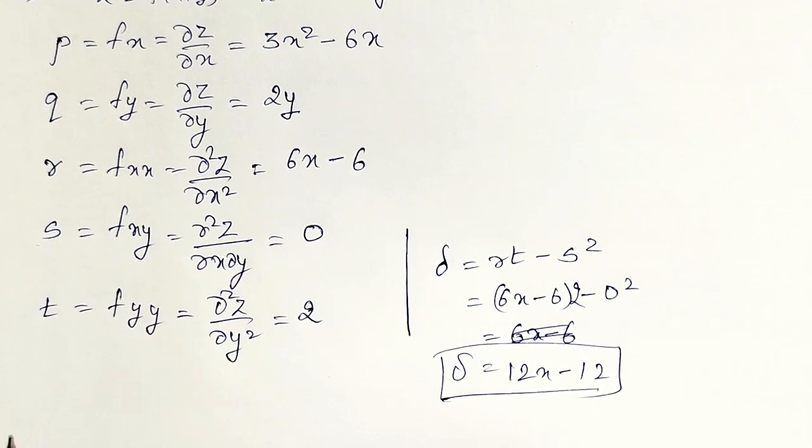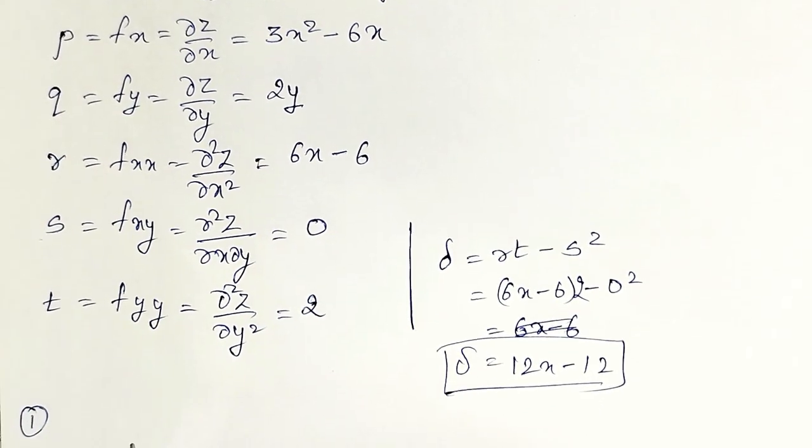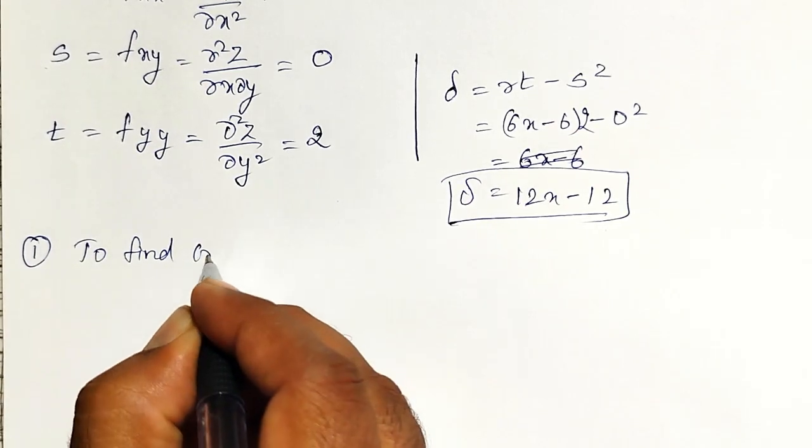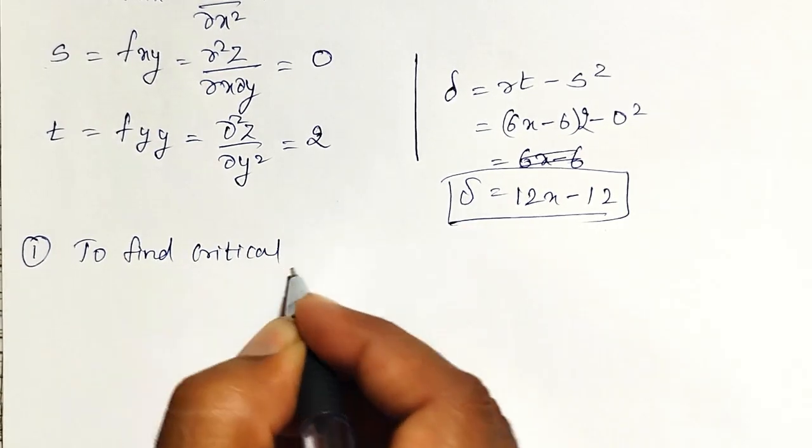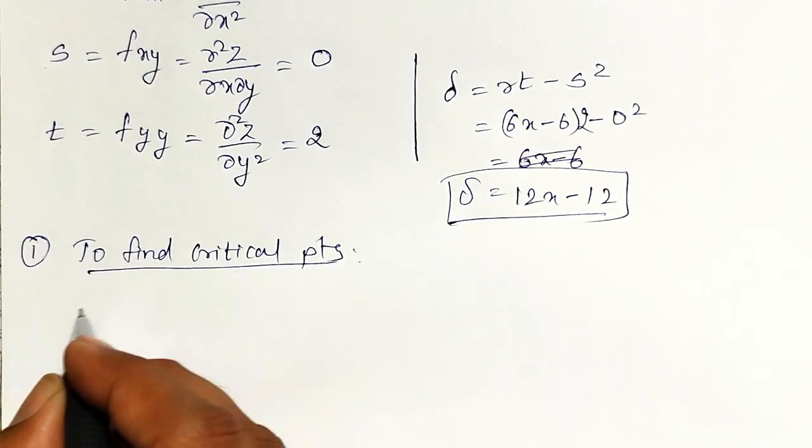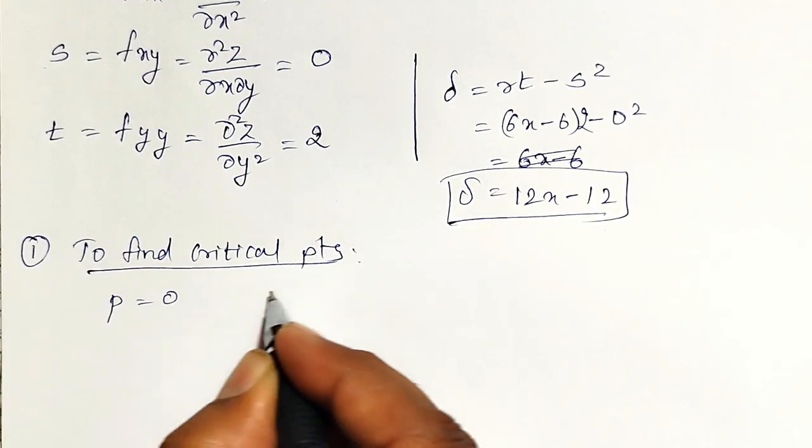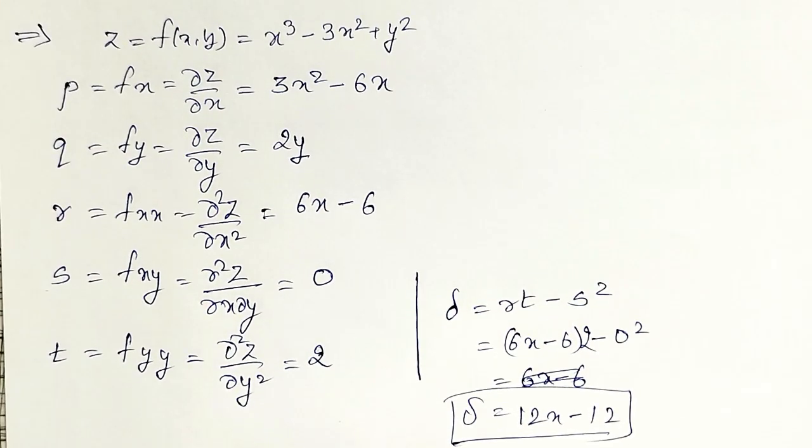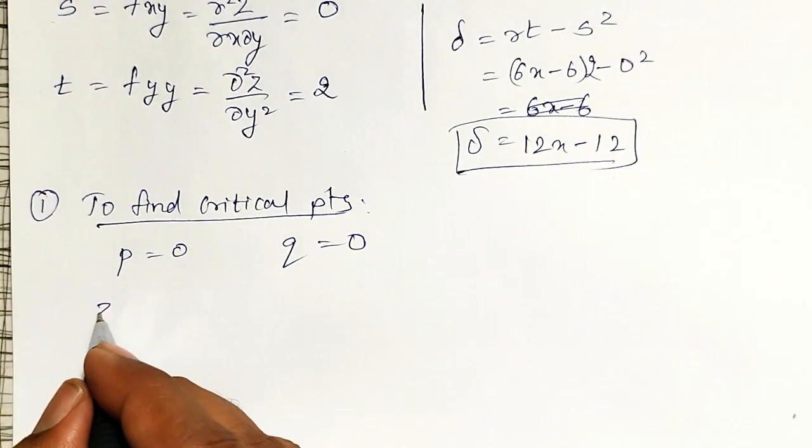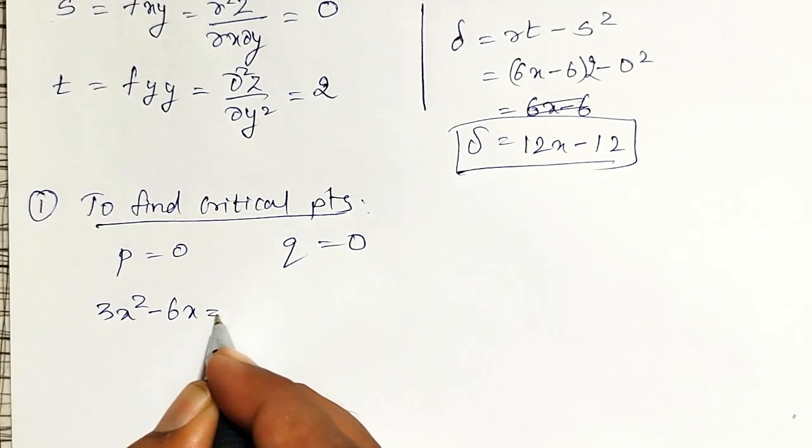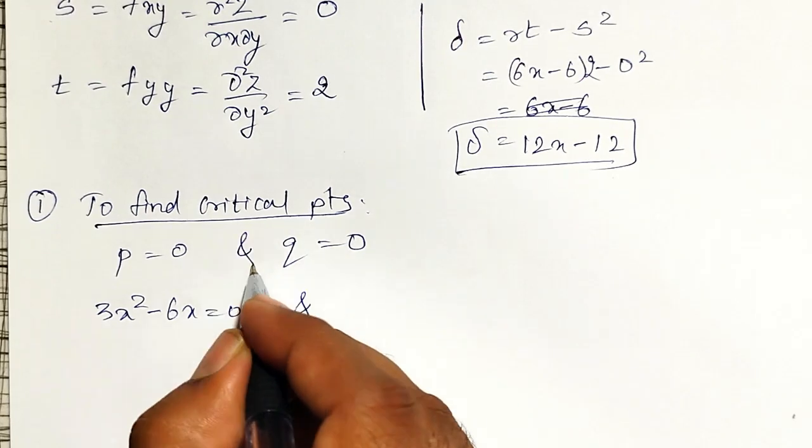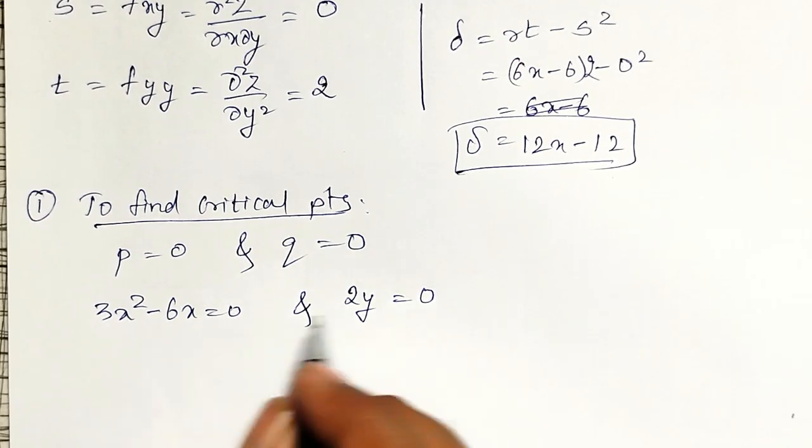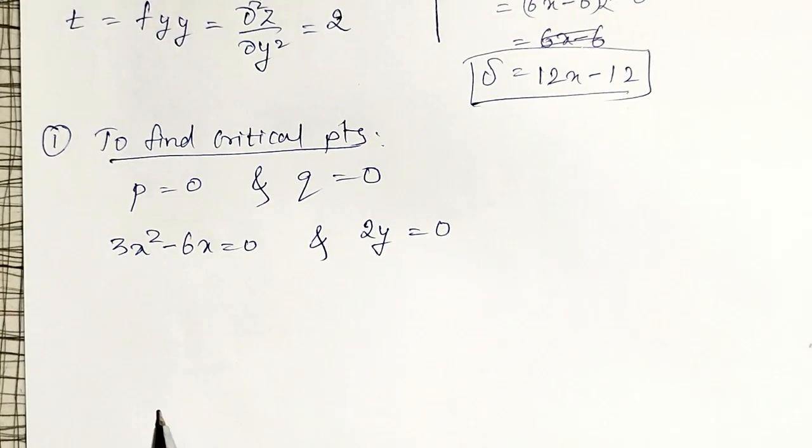All these I have kept ready. Now, first, necessary conditions. What is necessary conditions? To find critical points. p equal to 0 and q equal to 0. What is my p equal to? p equal to 3x square minus 6x must be equal to 0. And q, q is my 2y must be equal to 0. I have to solve these two equations to get x and y.